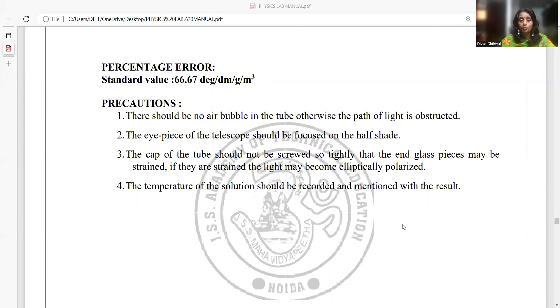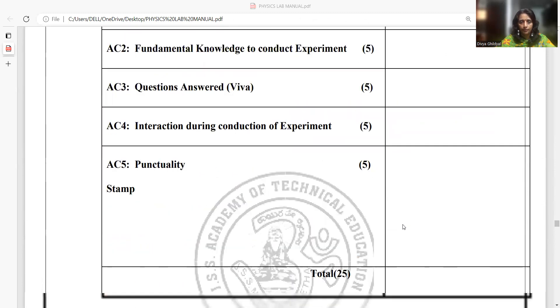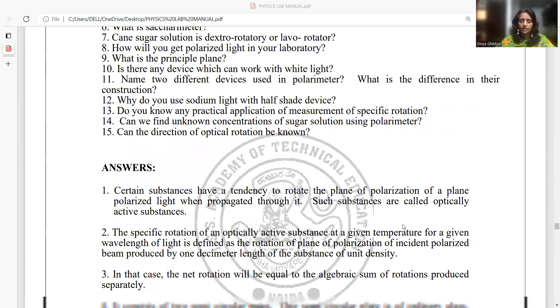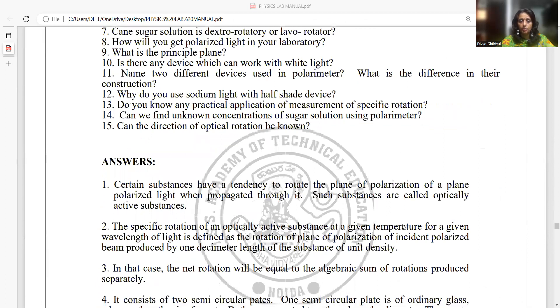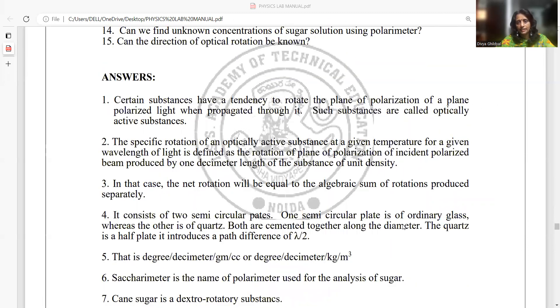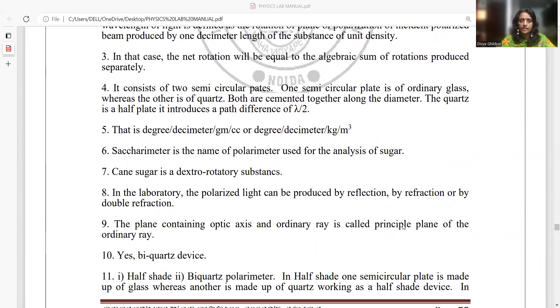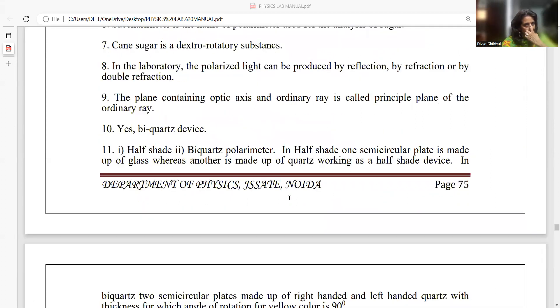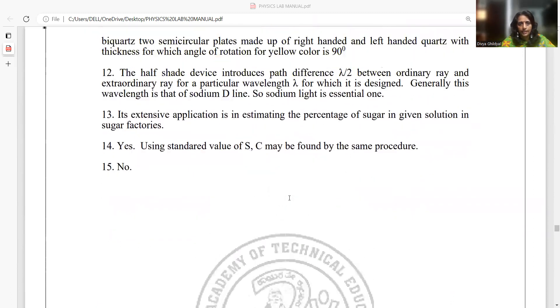The biggest precaution of this experiment is to please read the readings for full moon very carefully, and optically active substances are those that have a tendency to rotate the plane of polarization of polarized light when propagated through it. Specific rotation of an optically active substance at a given temperature for a given wavelength of light is defined as the rotation of plane of polarization of incident polarized beam produced by one decimeter length of the substance of unit density. The unit of specific rotation is degree per decimeter per gram cubic or degree per decimeter per kg meter cube. Saccharimeter is the name of polarimeter that is used for the analysis of sugar. Cane sugar is dextrorotatory. We have two types of substances: levorotatory and dextrorotatory. And the Nicol prism is used to make the light a polarized one.